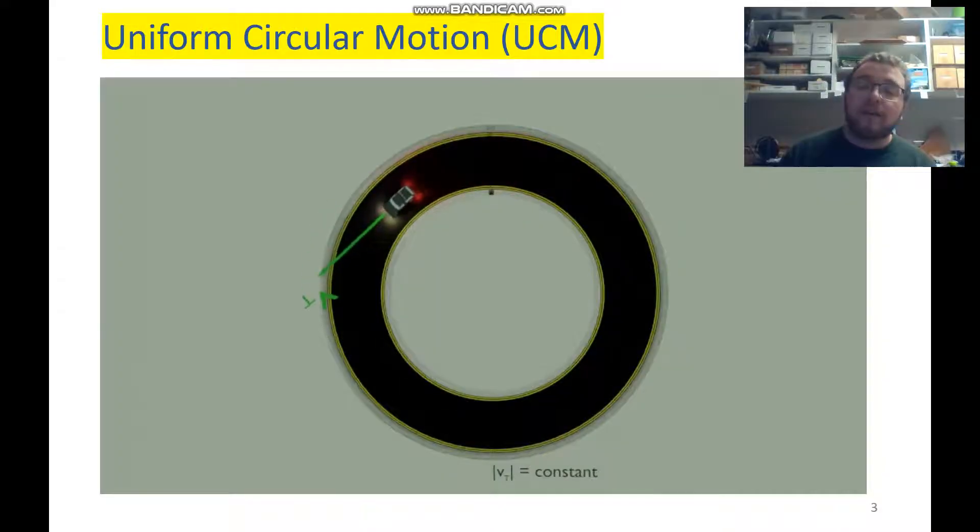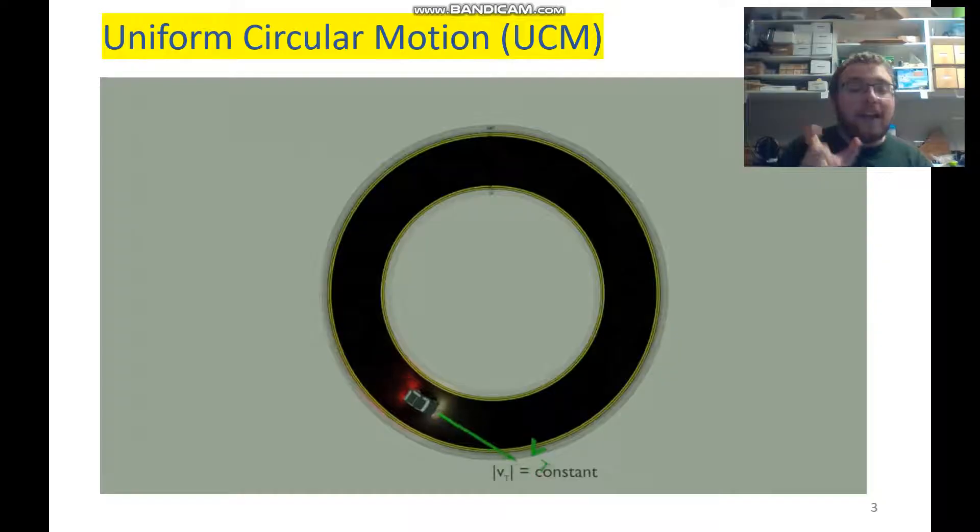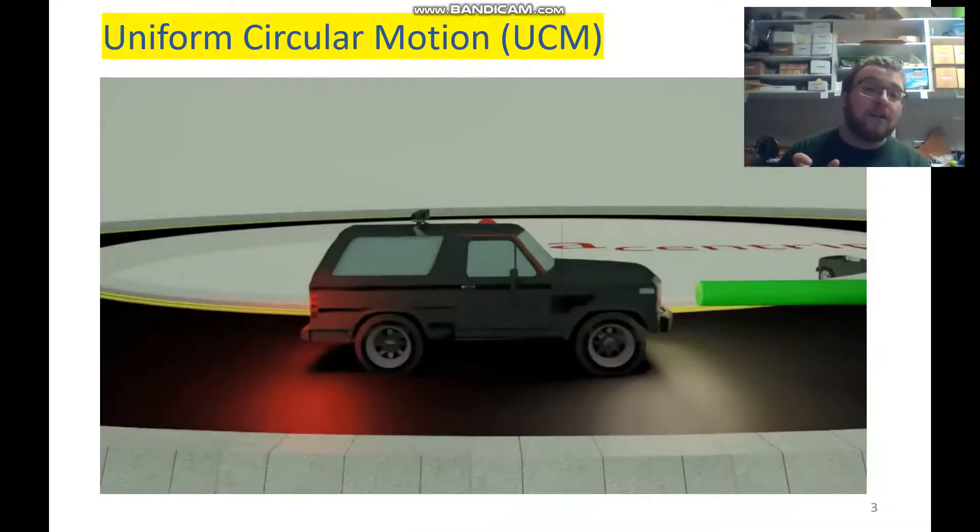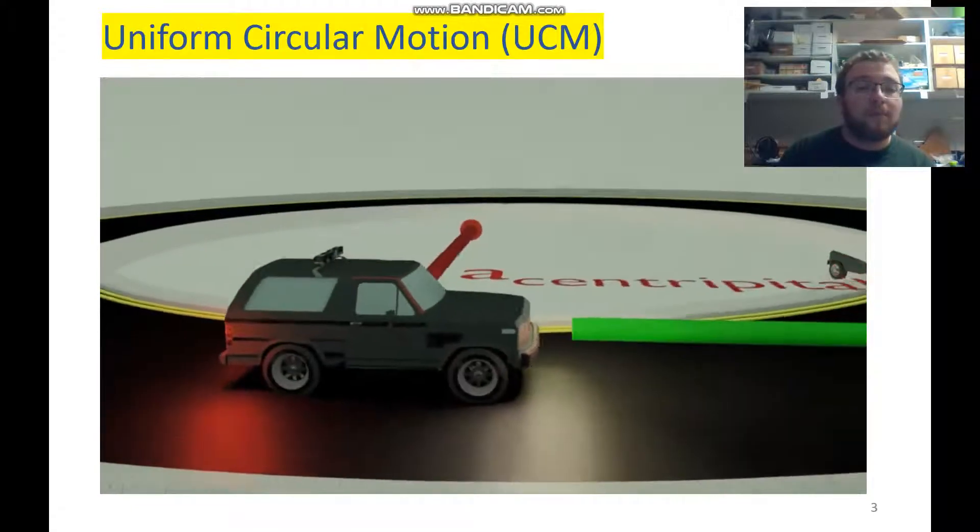So here we can see the velocity vector, which is this green vector, the length isn't changing. The direction is, but the length of the vector isn't. So it is driving at a constant speed.